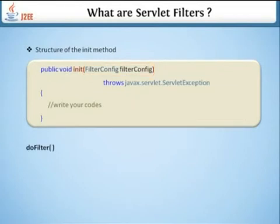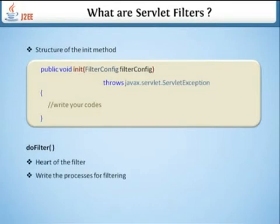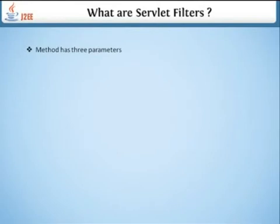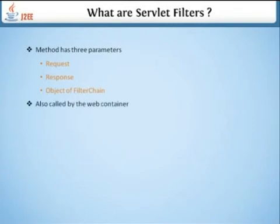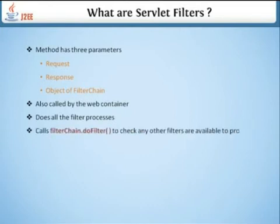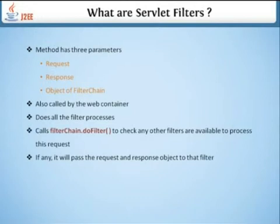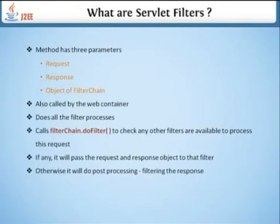The init method uses FilterConfig to provide any configuration parameters. Next is the doFilter method — this is where you write the filtering process. The doFilter method has three parameters: request, response, and an object of FilterChain. It is also called by the web container. After all filter processing, it calls filterChain.doFilter to check if any other filters are available to process this request. If there are, it passes the request and response objects to that filter; otherwise, it performs post-processing filtering of the response.